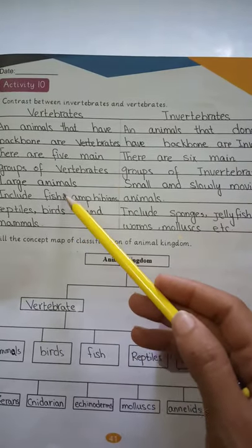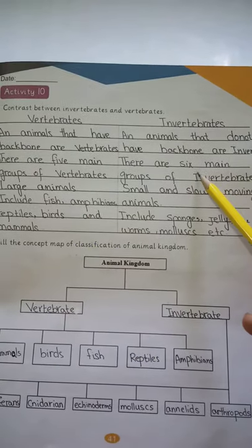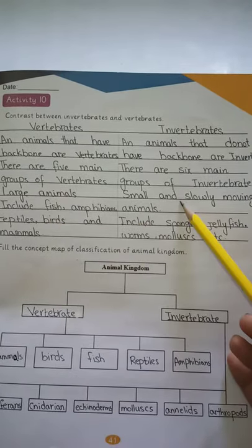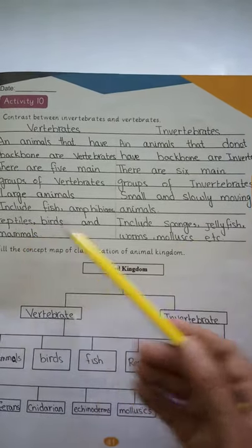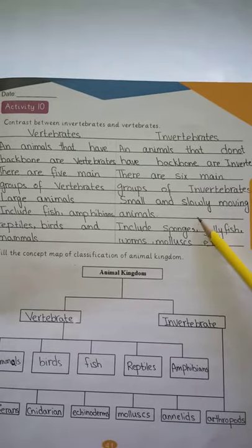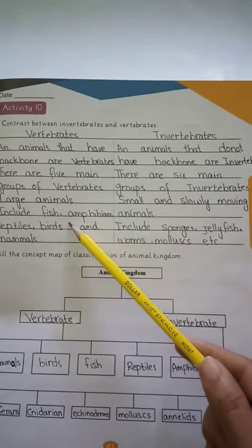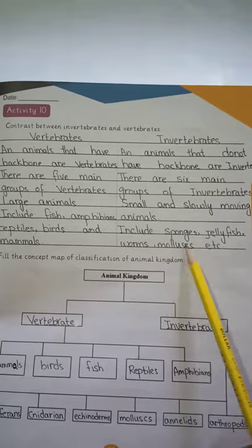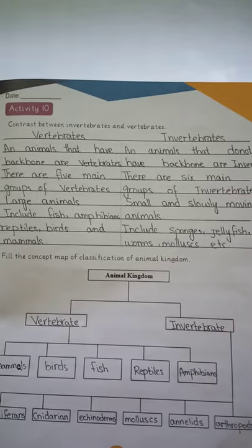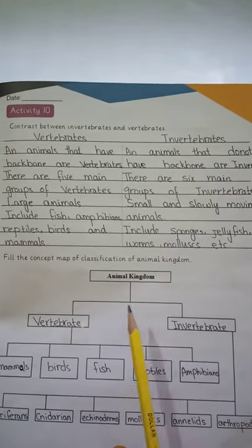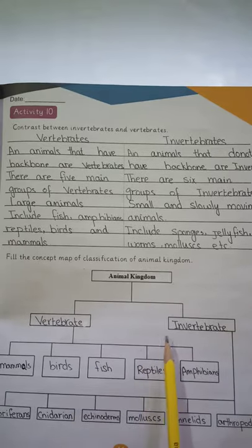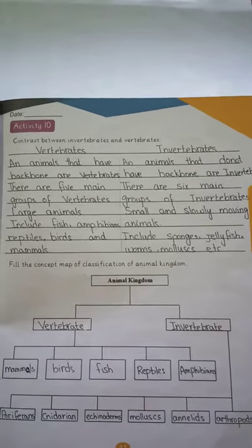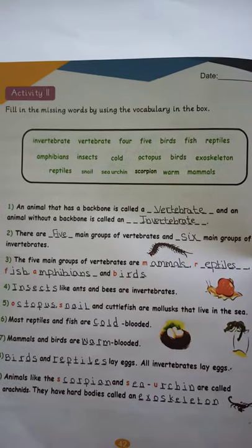Activity number 10 is a contrast between vertebrates and invertebrates. Animals that have a backbone are called vertebrates; animals that do not have a backbone are called invertebrates. There are five main groups of vertebrates and six main groups of invertebrates. Vertebrates include fish, amphibians, and reptiles, while invertebrates include jellyfish, worms, and mollusks.